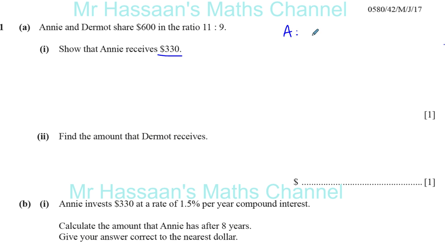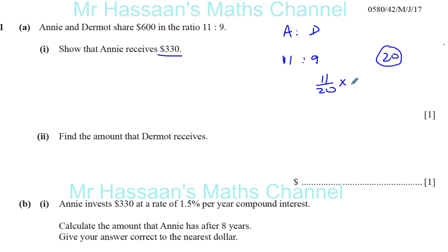Basically, you've got Annie and you've got Dermot. Annie receives 11 shares and Dermot receives 9 shares. In total there are 20 shares. Annie receives 11 out of 20 of those shares. So you can say Annie receives 11 out of 20 times the total amount, which is 600. 20 goes into 600 thirty times — that cancels — so you've got 11 times 30, which is 330. Annie receives $330.